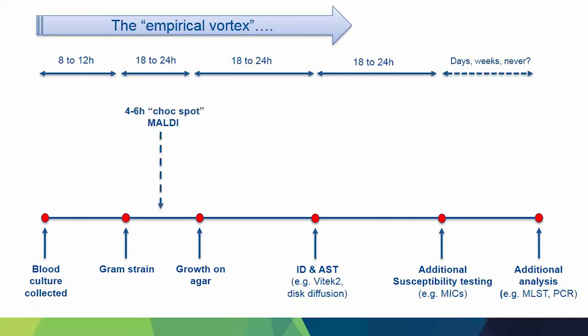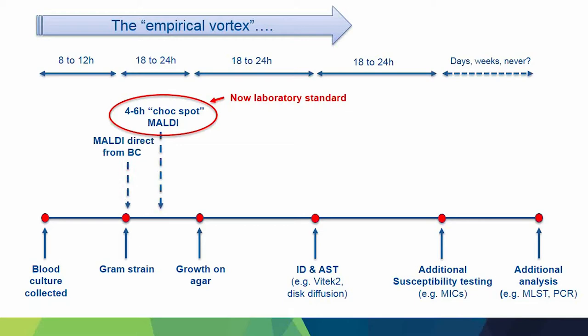In terms of where MALDI-TOF helps in the timeline, we've found that early growth MALDI works best. We take the gram stain, put it on a chocolate agar, give it a few hours in the incubator just to get enough growth, and MALDI from that. If you get a good ID from that it's highly predictive — good enough to phone a clinician and say you've got a Staph aureus or Pseudomonas. That's really sped up the identification component. There are also kits available for MALDI direct from blood culture, though they can be a bit labor-intensive.